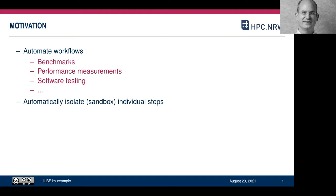One thing I like about JUBE is that it automatically isolates individual steps in the workflow. Without isolation, if you have several executions running in the same working directory, you might have things overwriting each other — one instance writing a checkpoint while another picks it up — making it hard to get consistent results across runs. By default, JUBE isolates each step in its own directory, so you'll notice it creates a lot of subdirectories in your run directory.